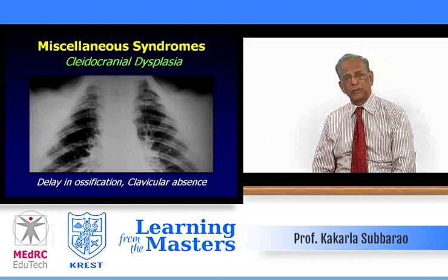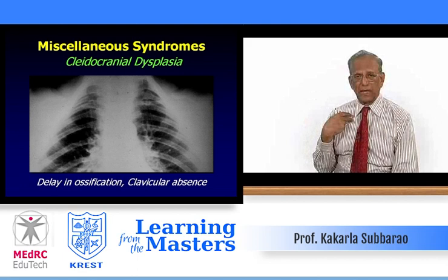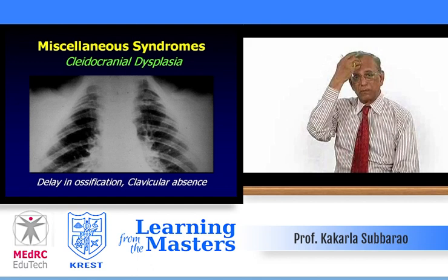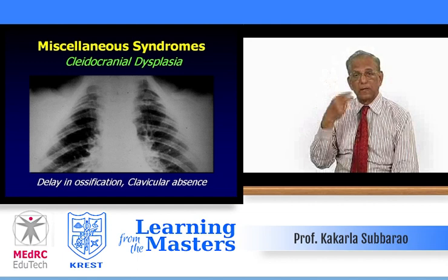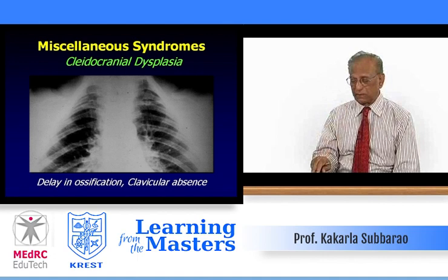In cranio-cleido-dysostosis, which we referred to in the context of pycnodysostosis, there is delay in the ossification centers and partial or complete absence of the clavicles. If you look at the skull, there may be wormian bones and midline defects. The metopic suture may be wide, and spina bifida may be found. Pubic symphysis may be wide because of the midline defect.